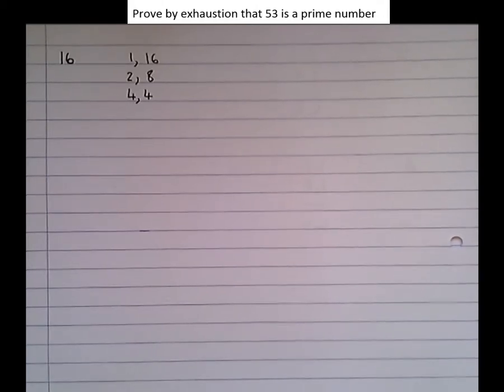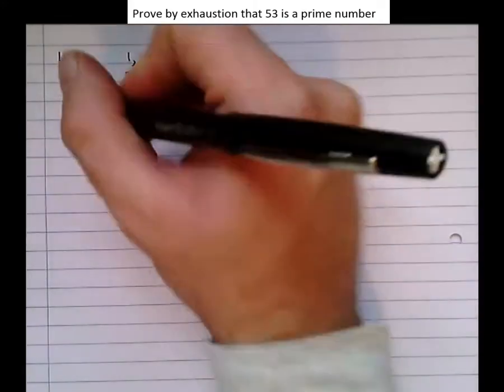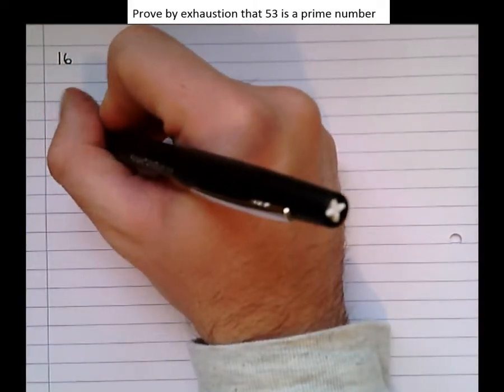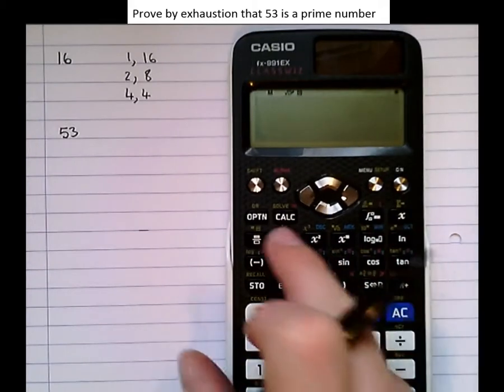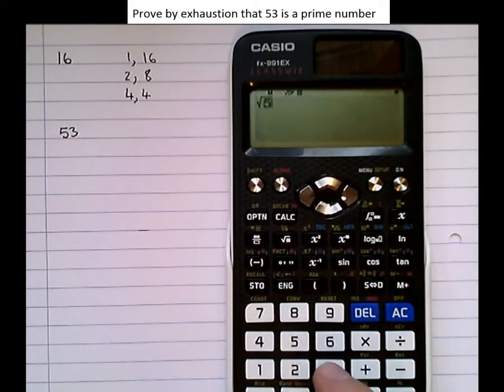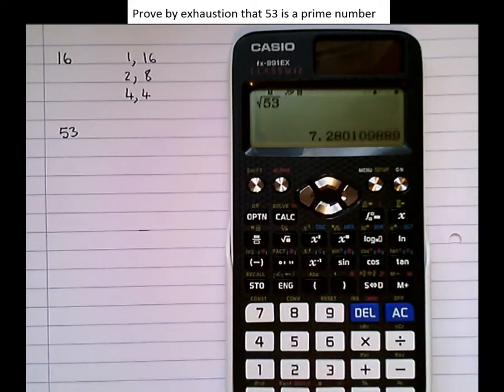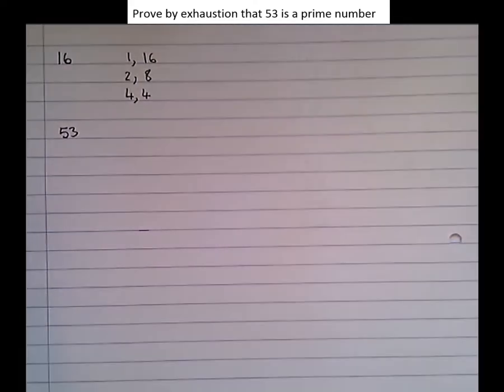Looking at 53, we know we can stop looking for factors when we've got as high as root 53, or the integer just before that. Let's see what root 53 is: it's 7.28. So we know we just have to check all the way up to 7, then we can stop.